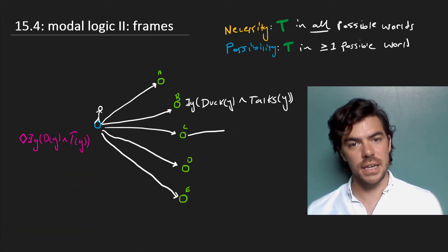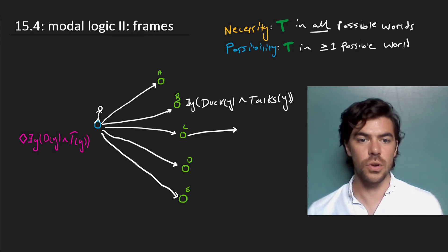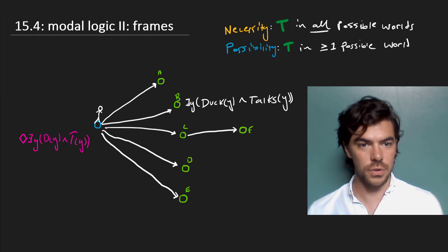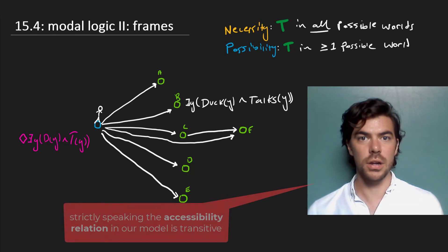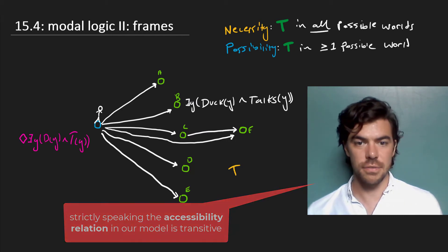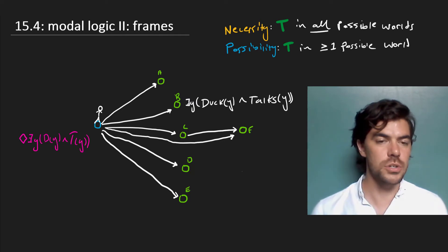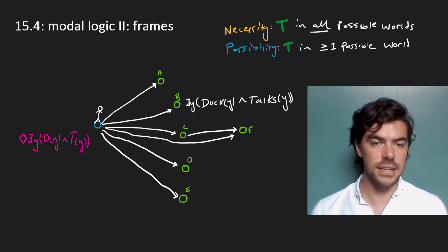But what about these worlds and what can they access? Well, suppose that C can access another world, F. If, supposing that for any world that any of these worlds can access, our world can access that one too, then our model is transitive. We can make this notion more rigorous by adding a predicate to our language that tells us that a world accesses another world.